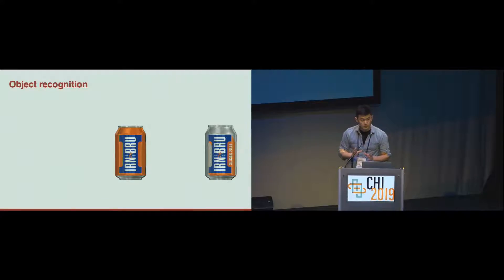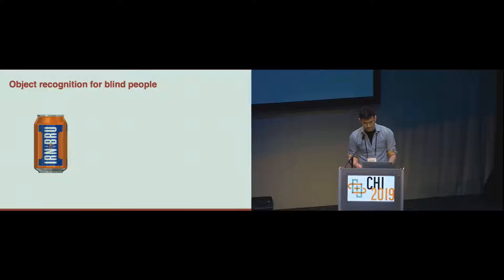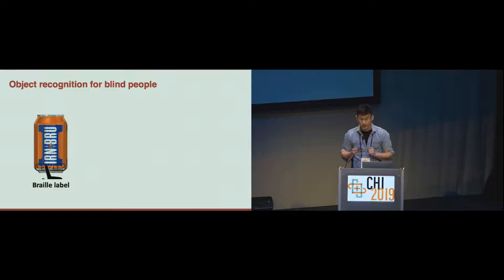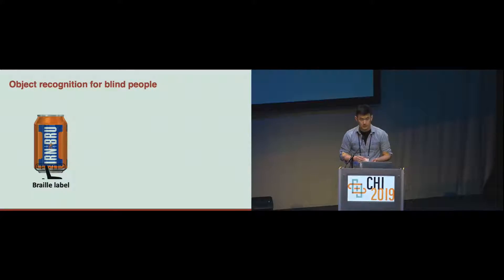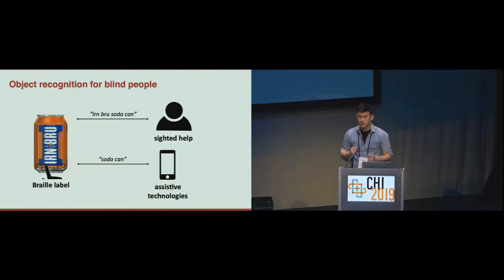It's because they have the same shape and are made of the same materials. So how would blind people distinguish these items? Blind people may put a braille label so that they can recognize it later, but as you can imagine, putting a braille label on every single item may not be practical, especially if the item is disposable. They could ask sighted people through FaceTime or any other video conference call to help recognize the object, or some assistive technologies can help them recognize this object.